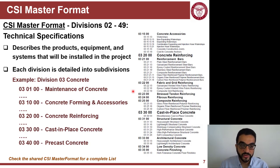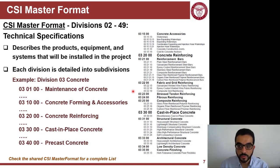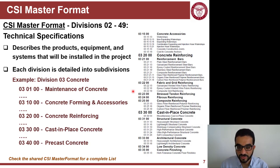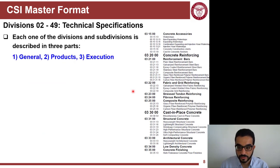Another way the CSI Master Format is used is for cost control. When you report your costs — labor, material, and equipment — the cost codes people use typically follow what is recommended by the CSI Master Format. So it's not only for standardizing specification communication; it's also about standardizing how you track costs and collect cost data.